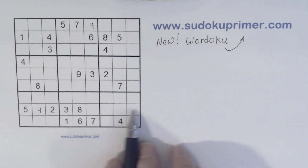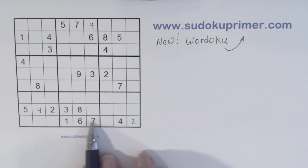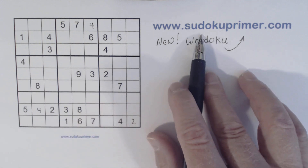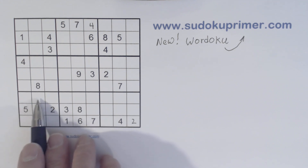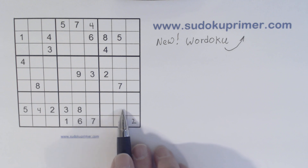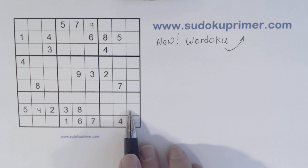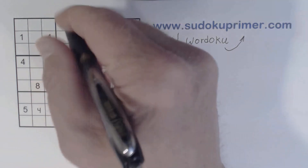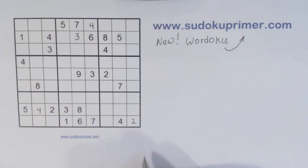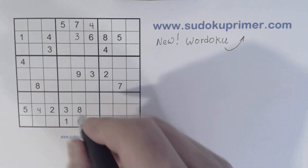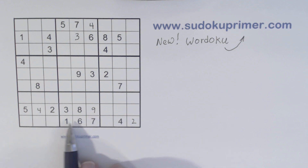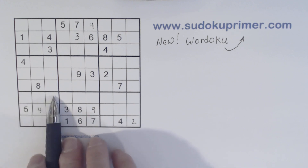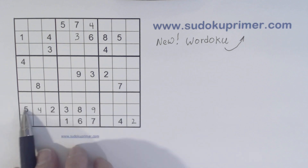Let me point out this bottom section here — we have a couple of wall patterns here and here. You can learn about patterns on SudokuPrimer.com. Because of these wall patterns, we know that these cells are one, six, seven triplets. And these are also one, six, and seven.